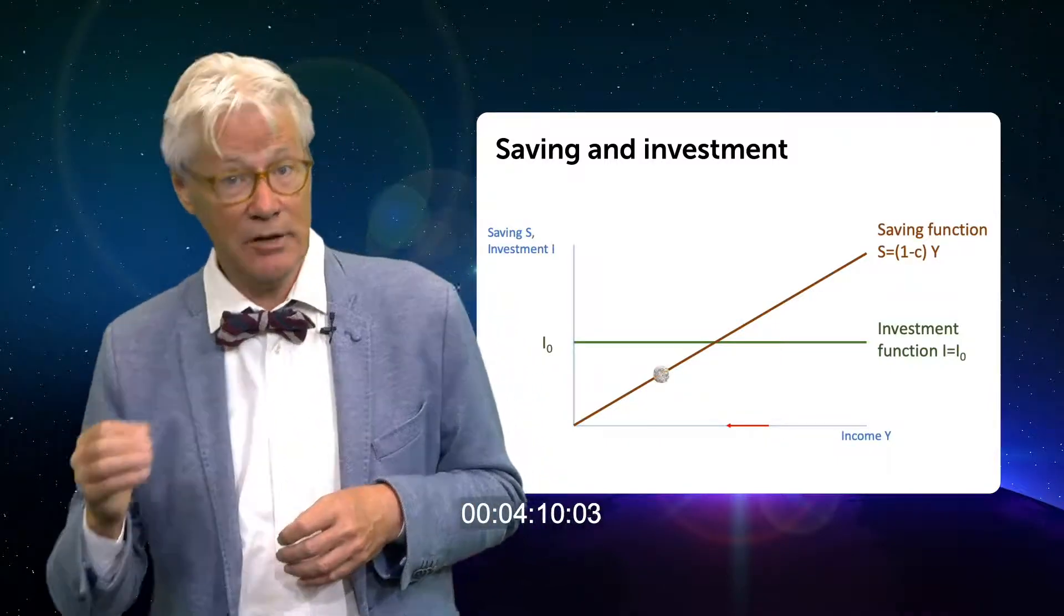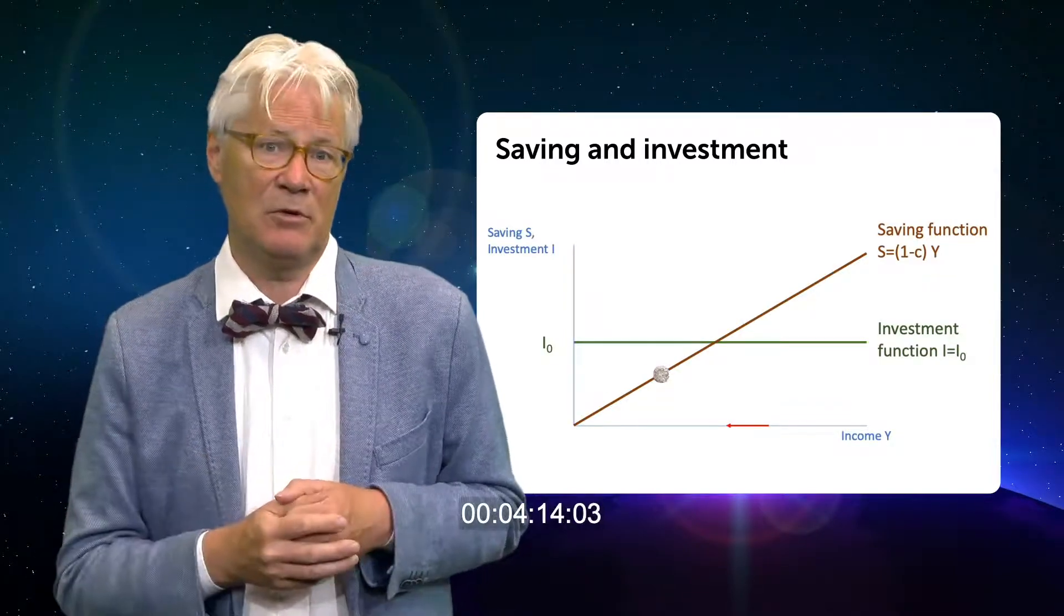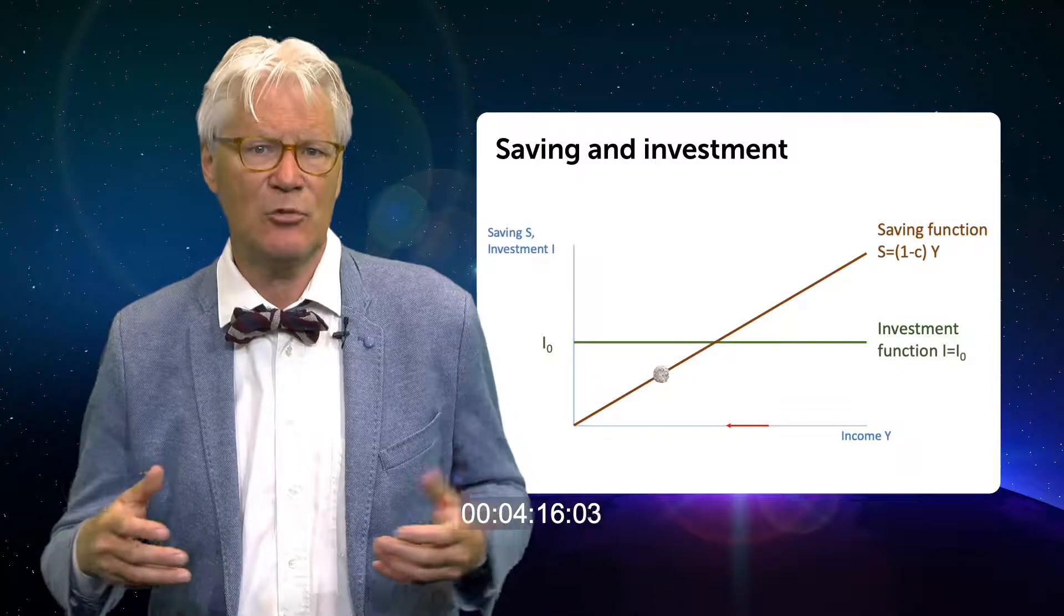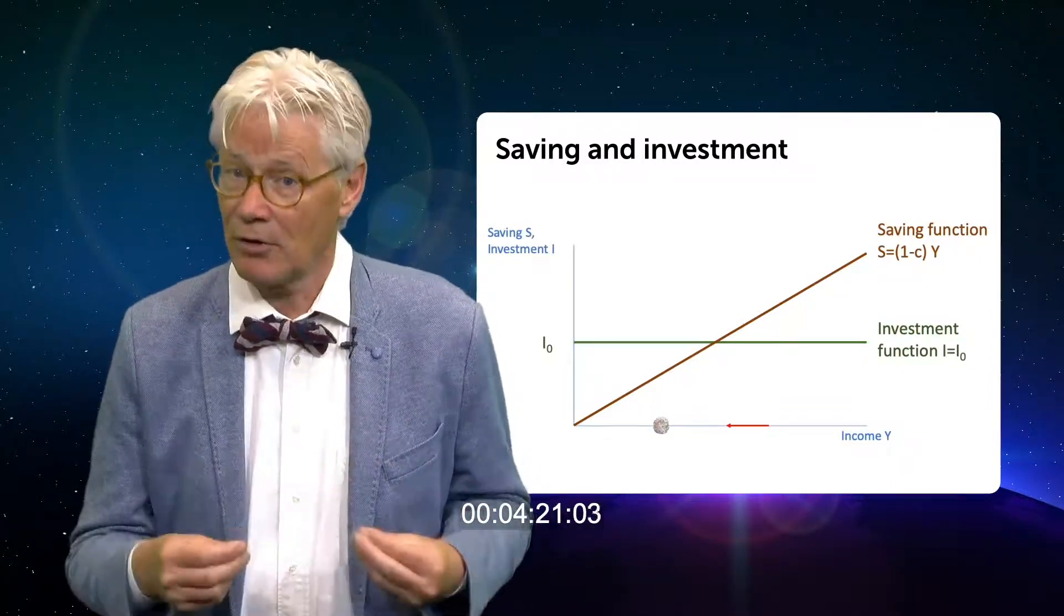If we are to the left of the equilibrium, planned saving would be below planned investment, as consumers spend more than anticipated and inventories decline. Now firms will increase production.